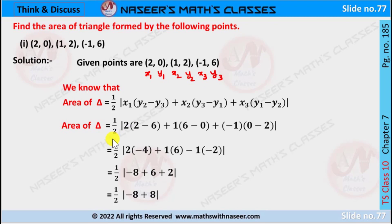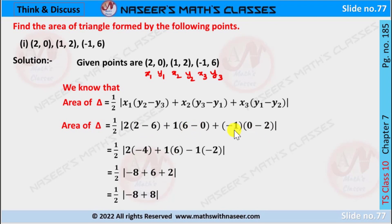It can be written as one-half mod of: 2 times (2 − 6), plus 1 times (6 − 0), plus (−1) times (0 − 2). Now, 2 minus 6 is −4, and 6 minus 0 is 6, and 0 minus 2 is −2. Multiplying: 2 times −4 gives −8.